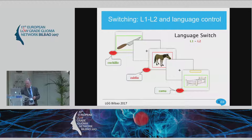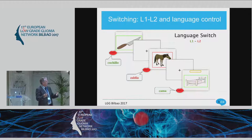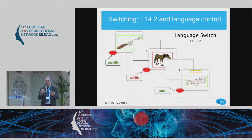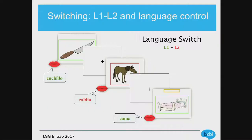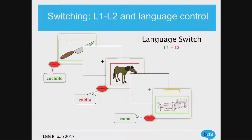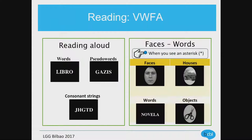So you have access to semantics and morphology. Depending on how the tumor is located and whether the patient is bilingual or monolingual, in the case of bilinguals we also use switching. Switching gives you not only access to both languages — because you want to map the two languages — but also to executive control. For example, if the square is red you have to name it in Basque, if the square is green you have to name it in Spanish. You have to control yourself, and therefore you put in motion other circuits apart from just language access.